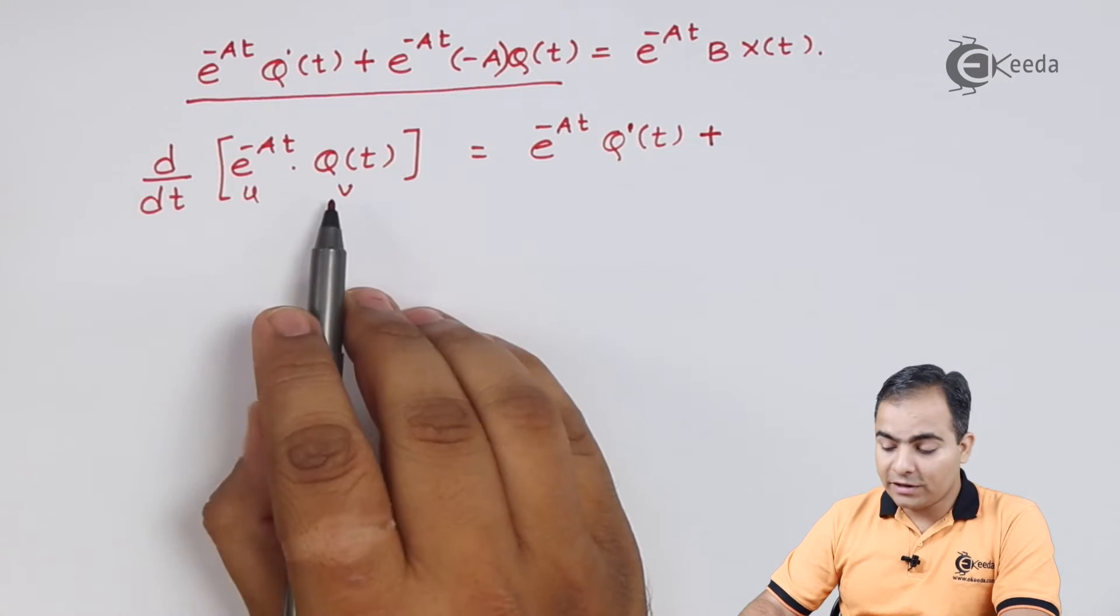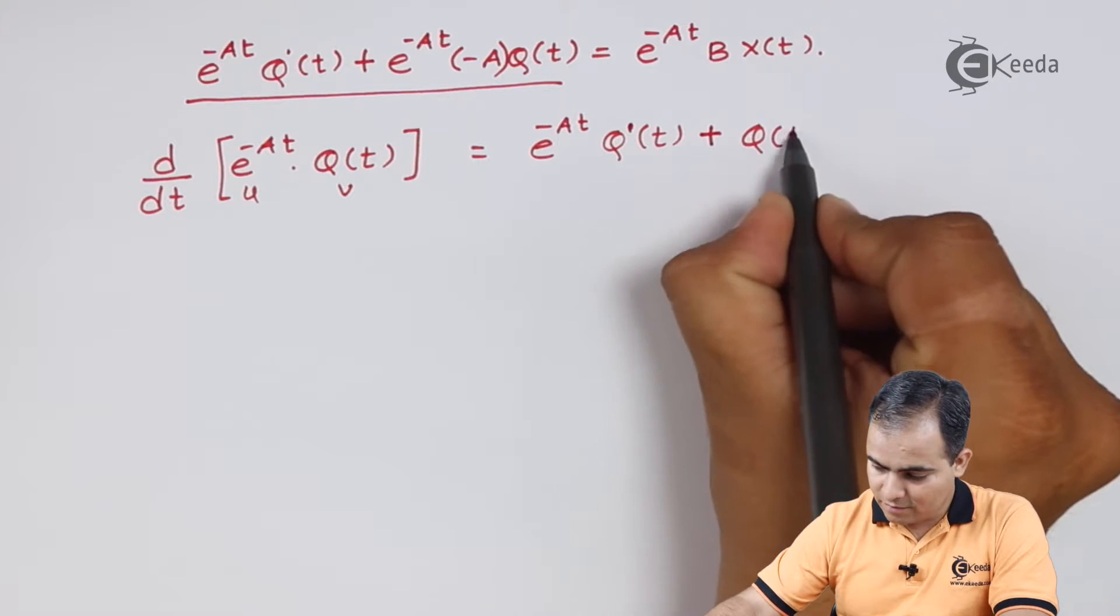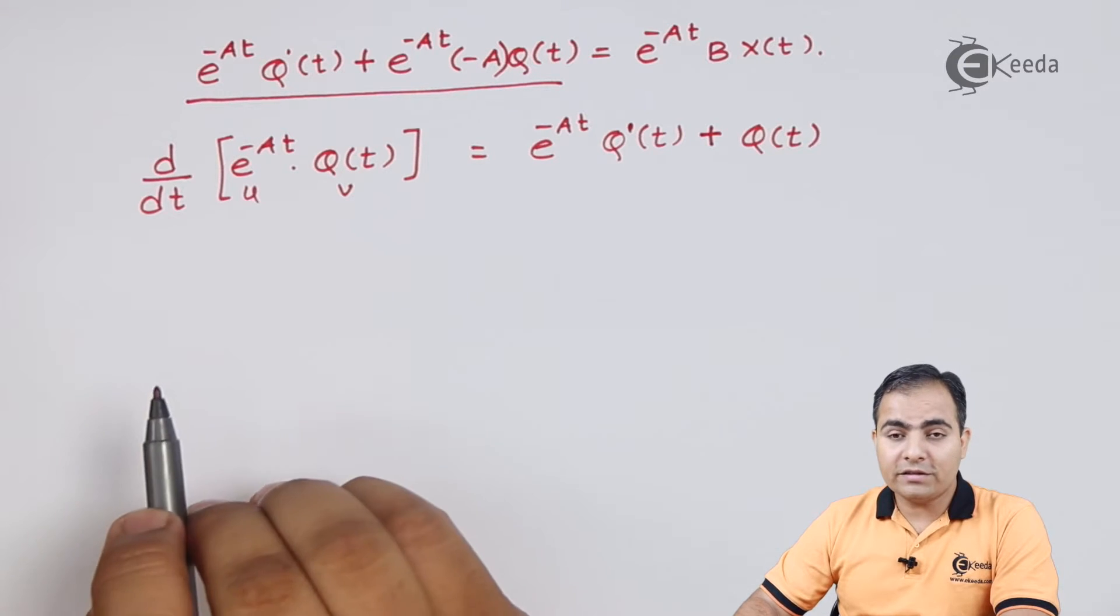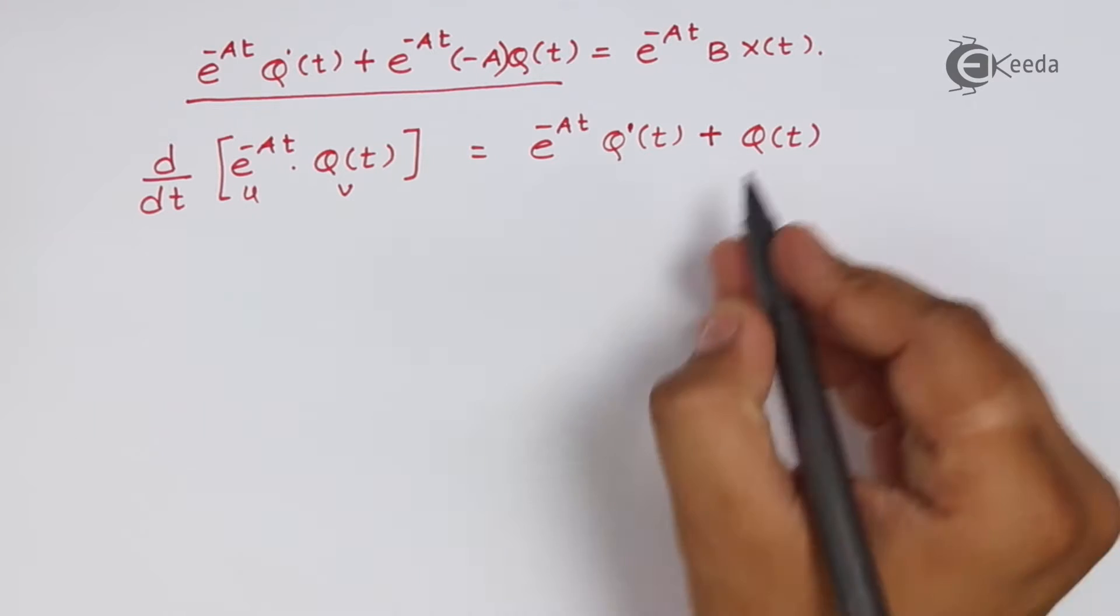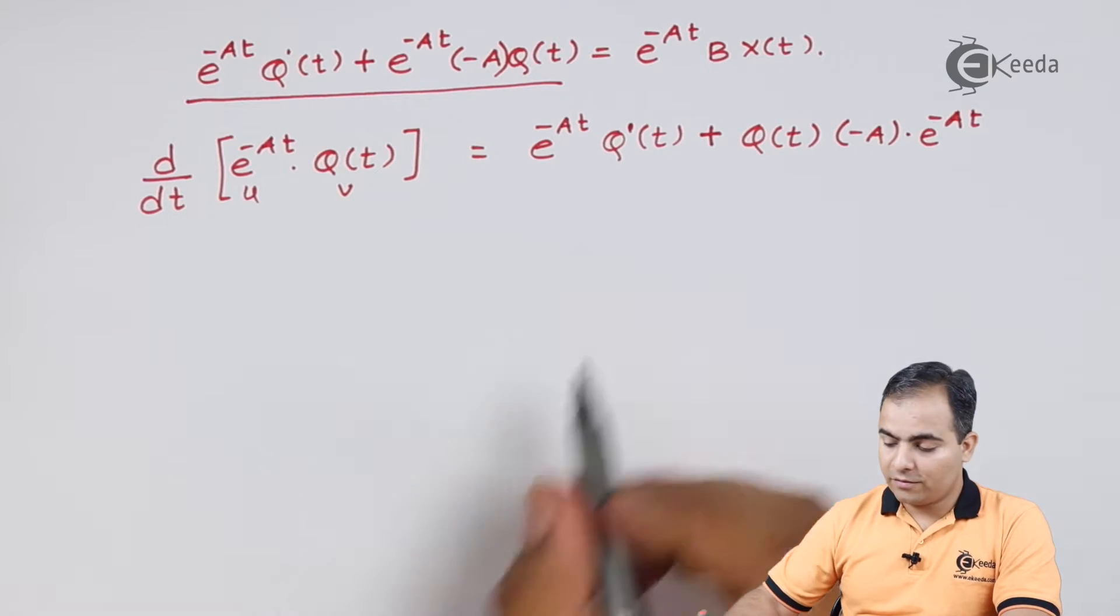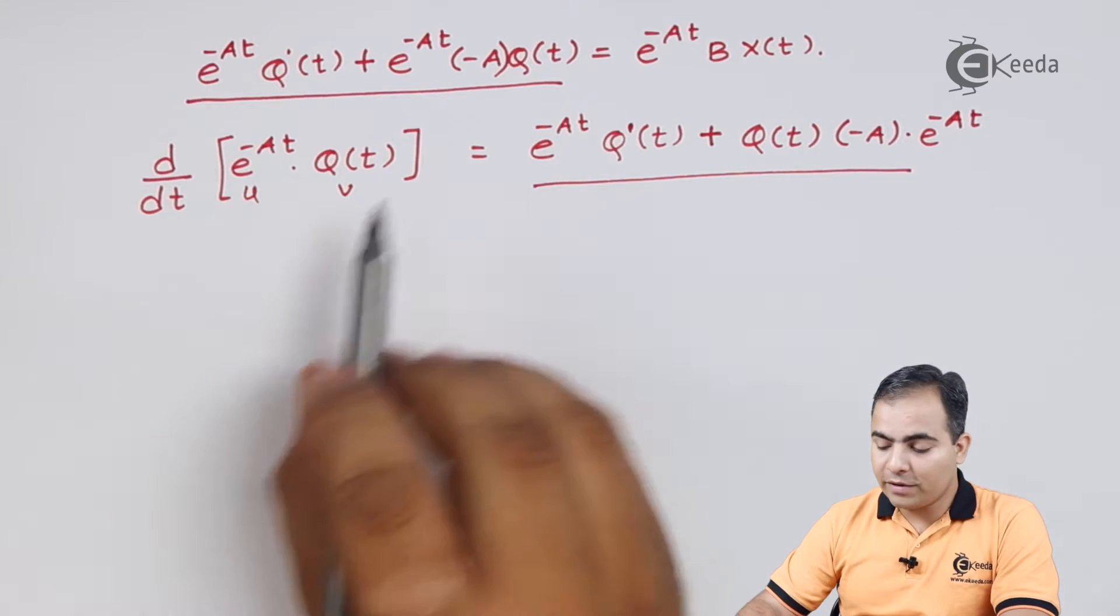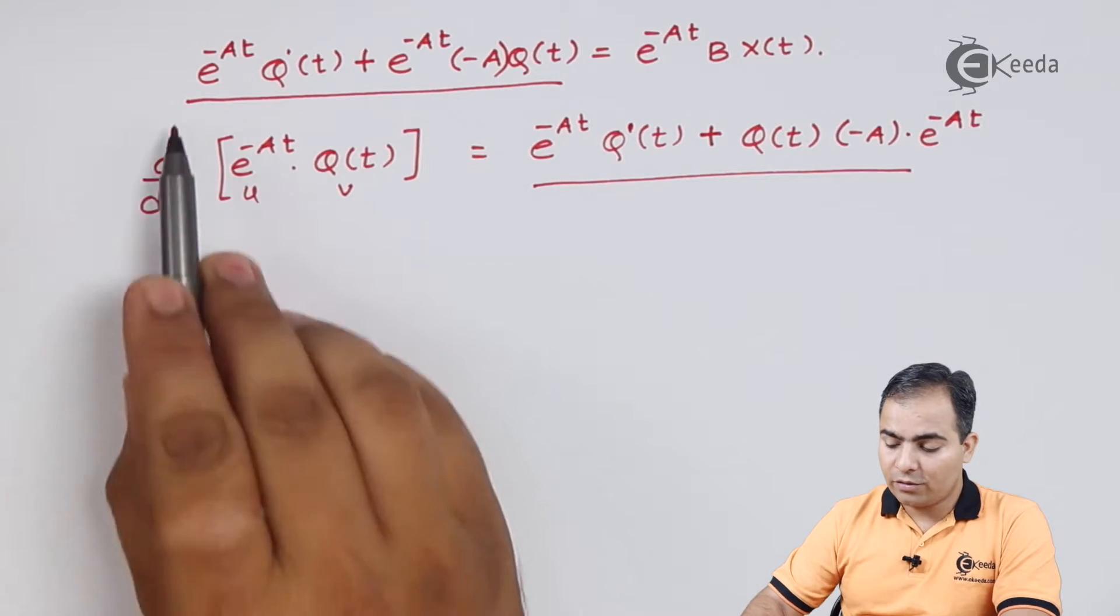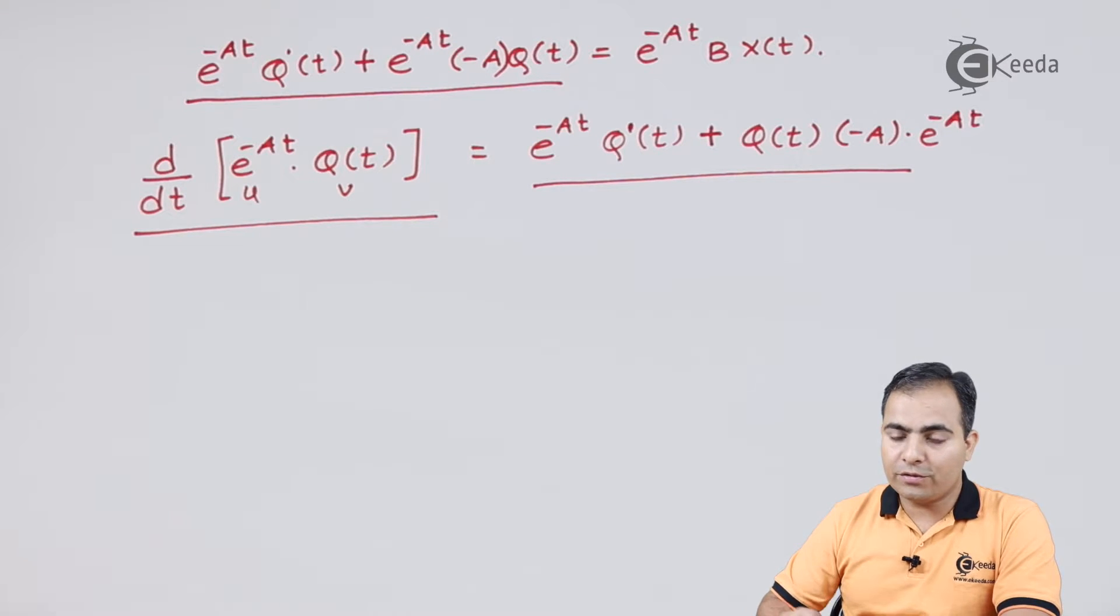So you can write q'(t) also or dot on q(t). Now next part is v into derivative of u, so we will write v first. Now e to the power minus At differentiation is minus A into e to the power minus At. Now just compare this right hand side part with this left hand side part. I am going to replace this whole left hand side by d/dt of e to the power minus At into q(t).